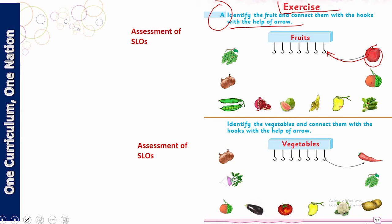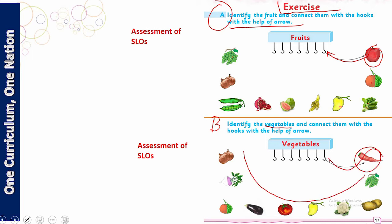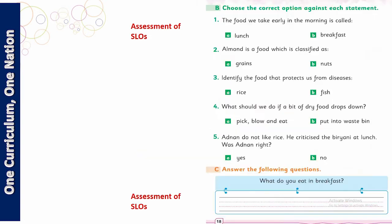Jo jo fruits hain un ko neeche se upar ke saath aap ne connect karna hai. Issi tarike se yahaan Part B mein aap ne pyare bachon un mein se vegetables pick karni hain, jis tarah one vegetable has been picked. Yeh aap ne apni book mein is activity ko detail se perform karna hai. Is ke baad there are some multiple choice questions.